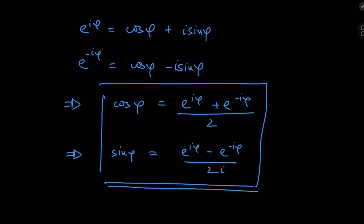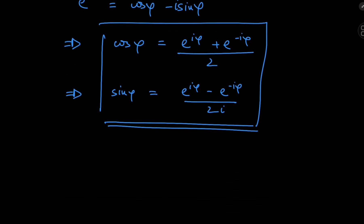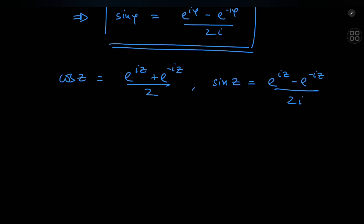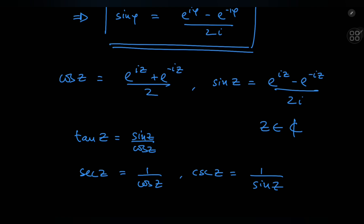We can generalize this because we know exactly what a complex exponential e to the z is. Using these equations, we define the cosine of a complex number z as e to the iz plus e to the negative iz divided by 2, and the sine of a complex number z as e to the iz minus e to the negative iz divided by 2i. Once you know what sine and cosine look like for all complex z, you've basically unlocked the trigonometric framework for complex analysis, defining the other trig ratios — tangent, secant, cosecant — in exactly the same way.